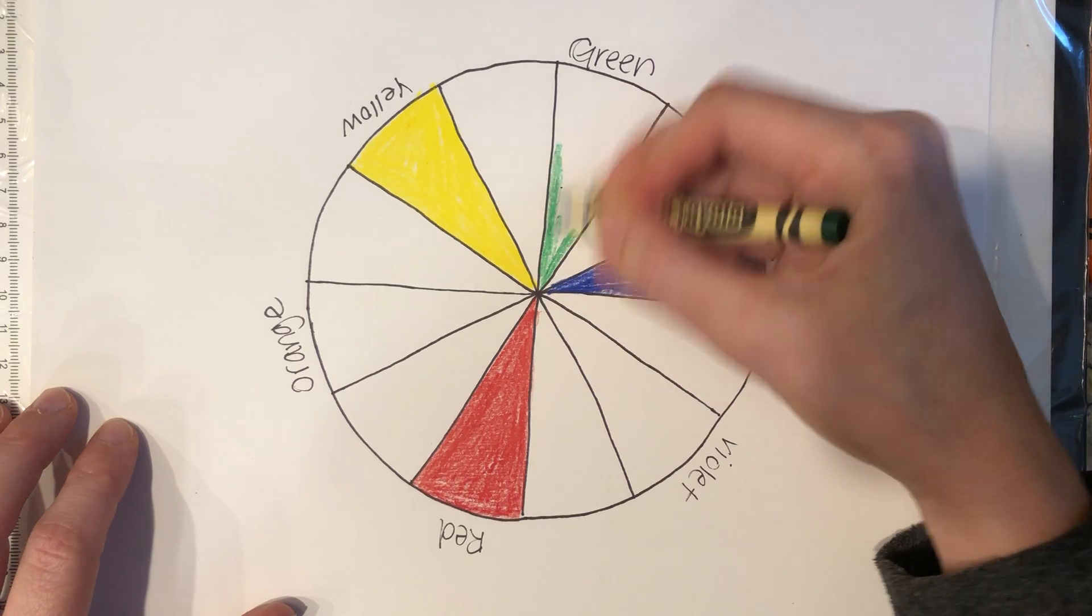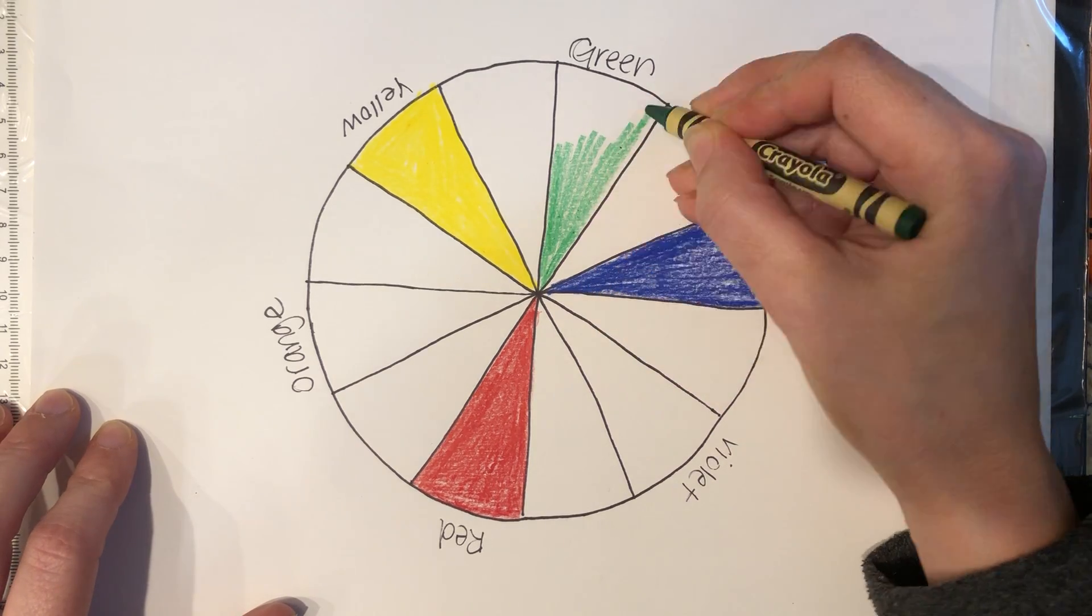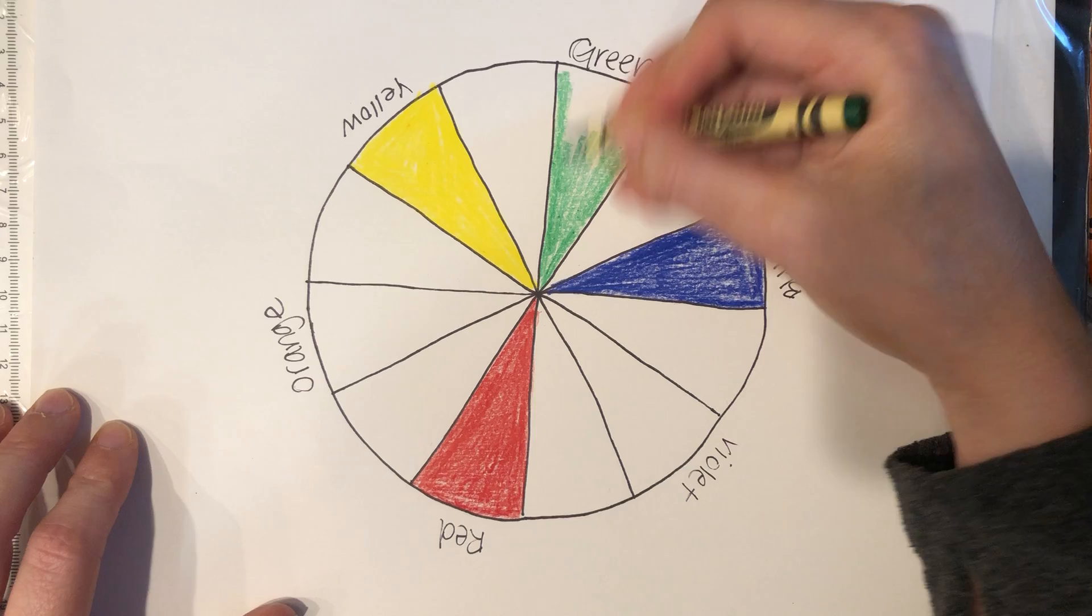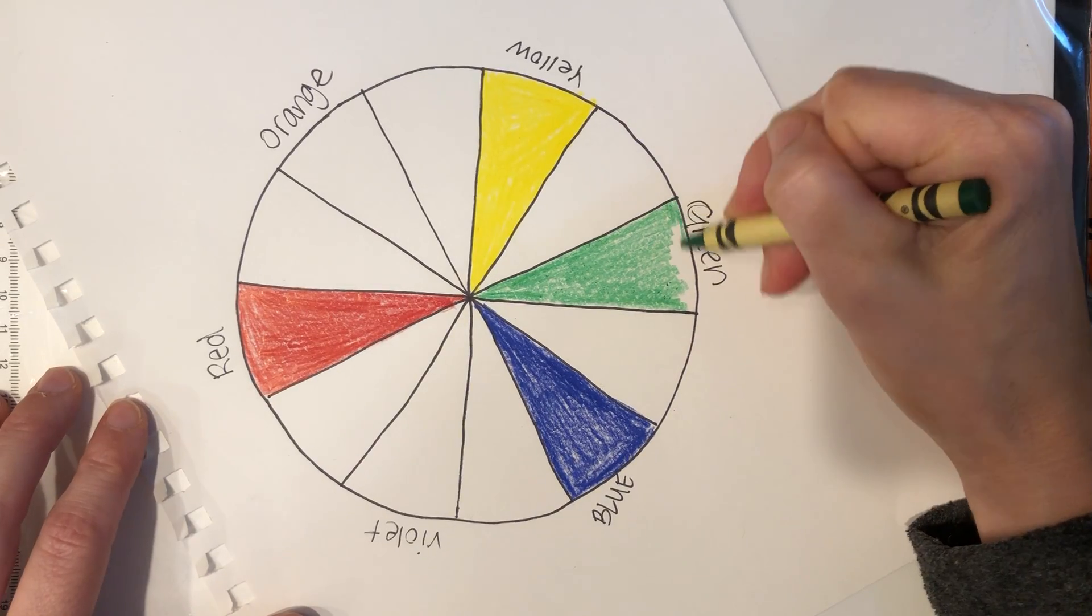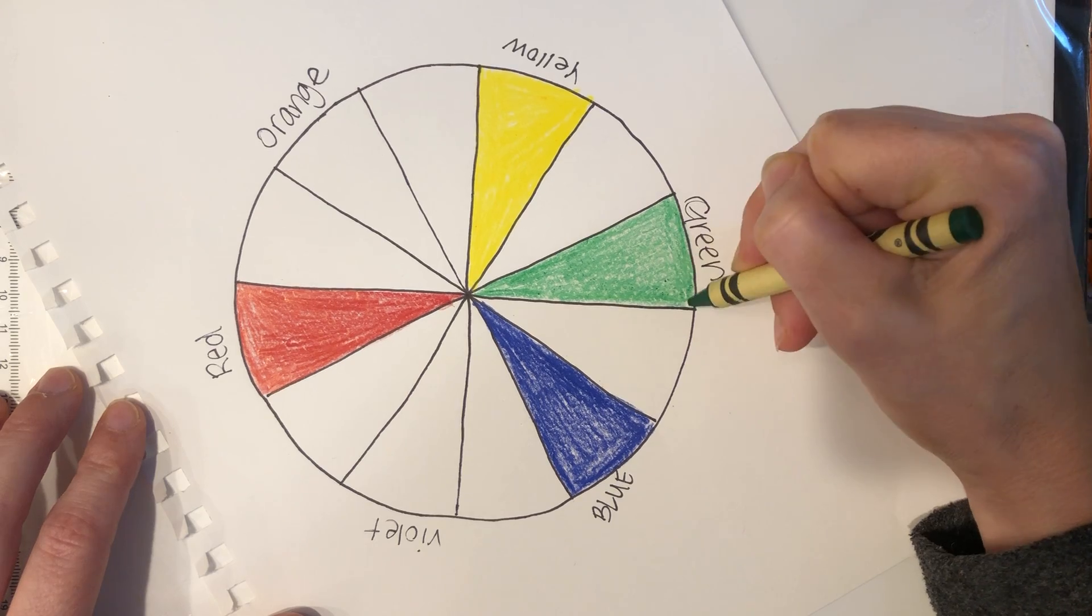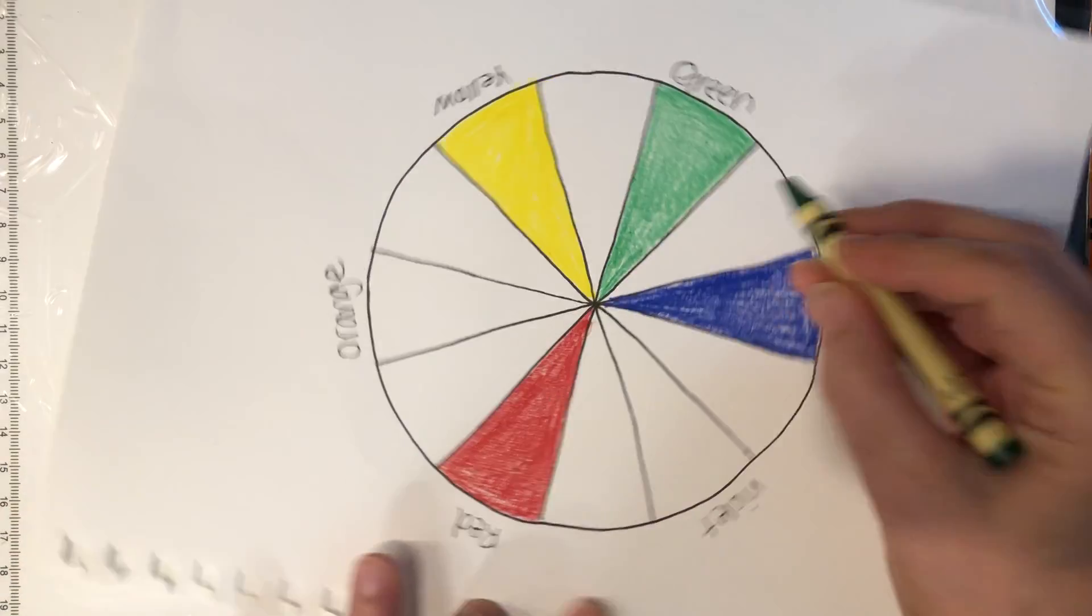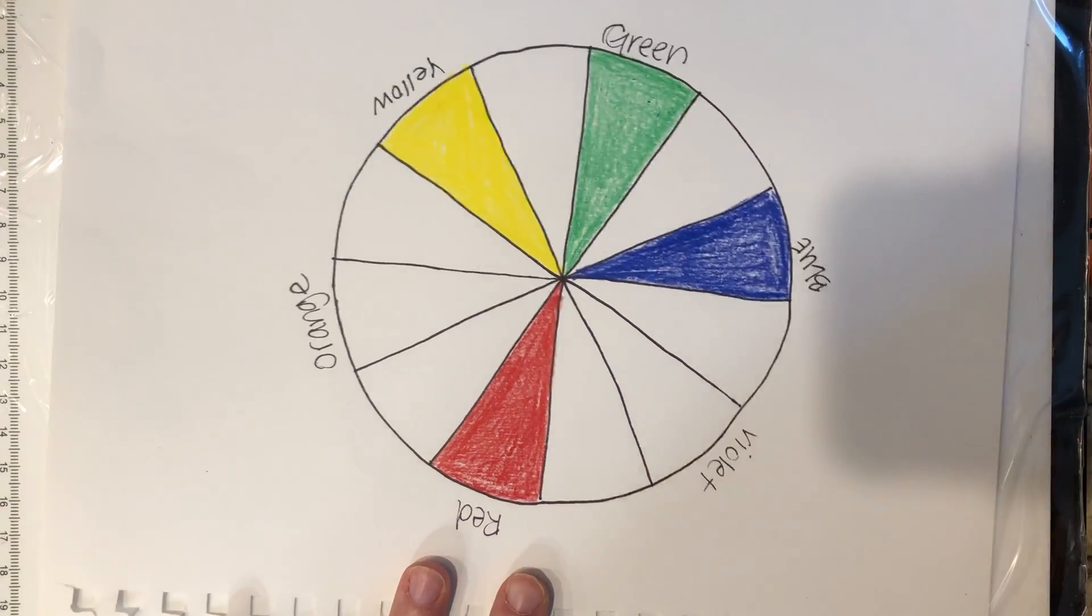I'm mixing it now, so I have color pencil and crayon in here, and that is totally fine. Usually you can find primary and secondary colors, no problem, in any variety of crayons or colored pencils that you own.